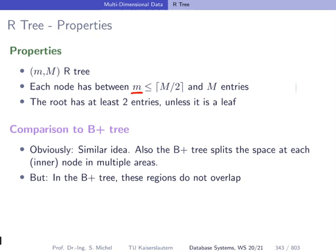In the definition, every node of an R-Tree has between m and M entries. The root has at least two entries, unless it is a leaf. The R-Tree is similarly defined as the B+ tree, and we also want to make use of nodes adhering to the block size of our block storage devices. Here we have rectangles in the R-Tree pointing to child nodes, whereas in the B+ tree we had one-dimensional integer values or strings as separators. In the B+ tree, the regions the children capture do not overlap. In the R-Tree, this overlap can happen.